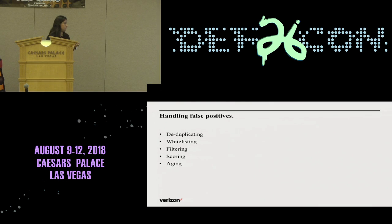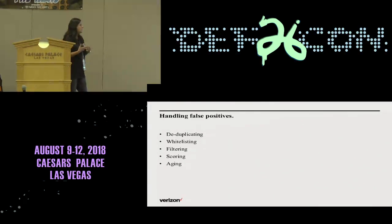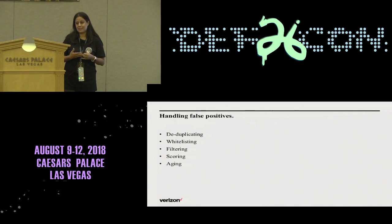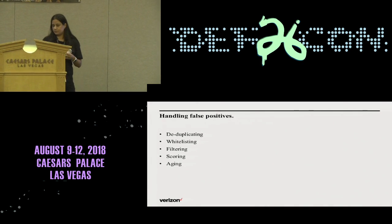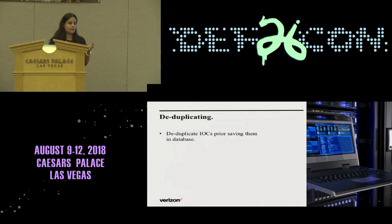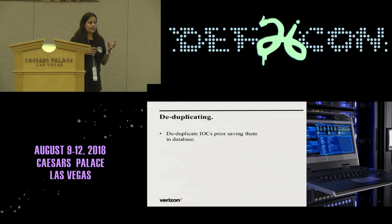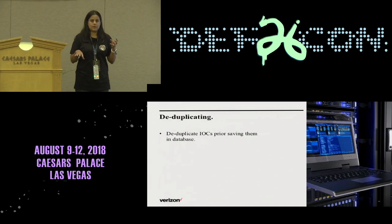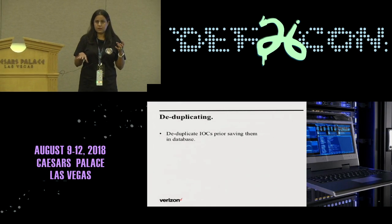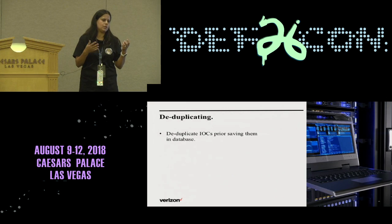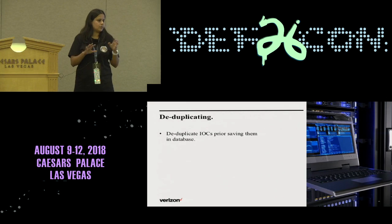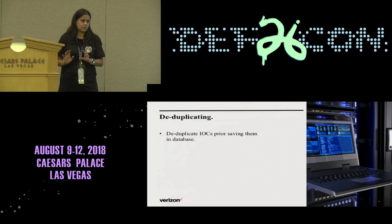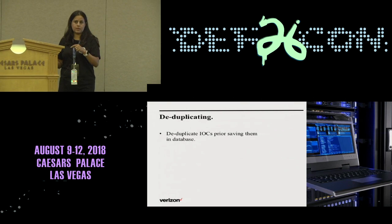What needs to be done is deduplicating, whitelisting, filtering, scoring, and aging. If you are inserting an indicator, check your database and see if it exists. If it does, then update it based on the source, the aging, the scoring — make some changes, but do not re-insert it.